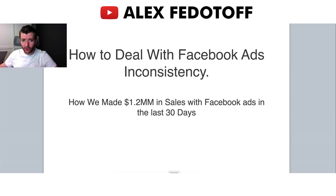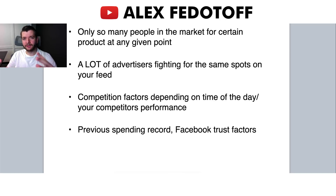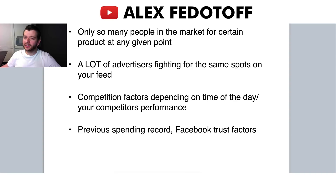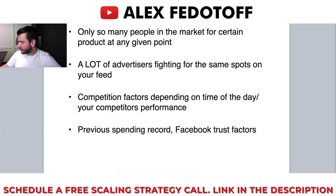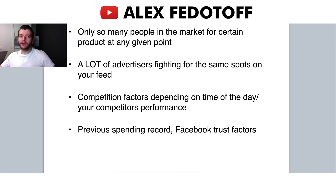Now let's get into it. How to deal with Facebook ads inconsistency — and the reason Facebook ads are inconsistent is because there are only so many people in the market for a certain product at any given point. For example, if you're selling something with very wide appeal like food, you can advertise continuously. But if you sell a specific product for a niche like fishing, there are only so many buyers at any given point.